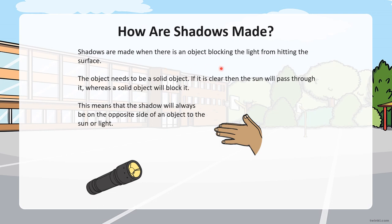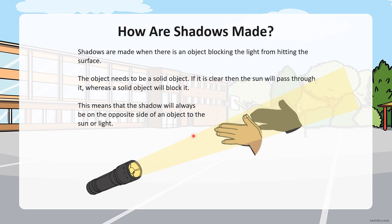How are shadows made? Shadows are made when there is an object blocking the light from hitting the surface. Look here — a hand and a torch. The hand will block the light, and then the shadow will be formed on the screen.